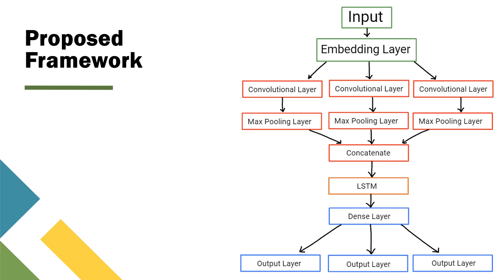Then we have a max-pooling layer directly after the convolutional layer. The max-pooling layer will essentially just take the most prominent features of each layer — in our case, the features most strongly correlated to either a vulnerable or safe contract. Then we concatenate all of these outputs from our various convolutional layers, and that concludes the end of the convolutional part of the model. Then we pass it through the long short-term memory, which is the recurrent part of our model. Finally, we have a dense layer, which then goes to various output layers. Since we have three convolutional layers and support for three types of vulnerabilities, we have three output layers, where each one represents the probability that our source code has a vulnerability from each category.